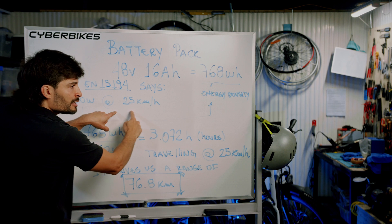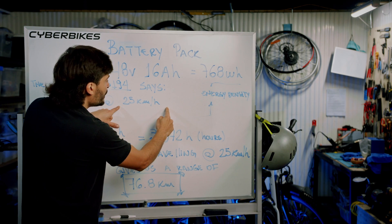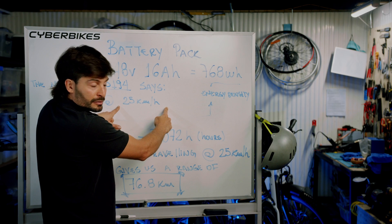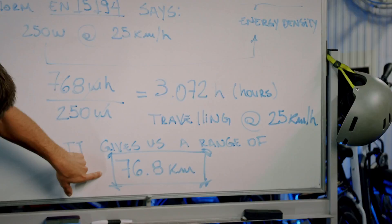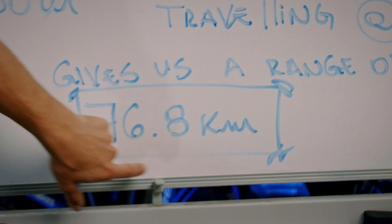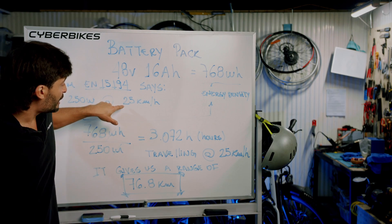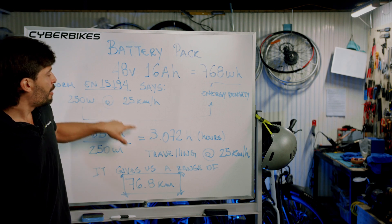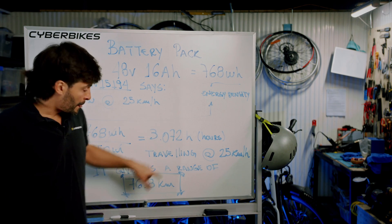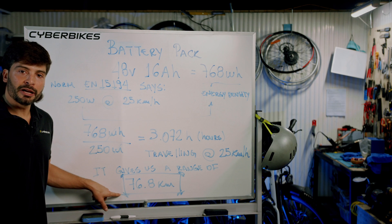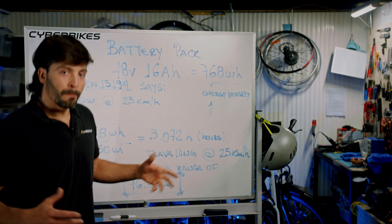If we consider traveling constantly on a flat surface at 25 kilometers per hour, we're going to have 76.8 kilometers of range — meaning we'll be traveling at 25 km/h for 3.072 hours. That's the best estimate I can give to my customers.